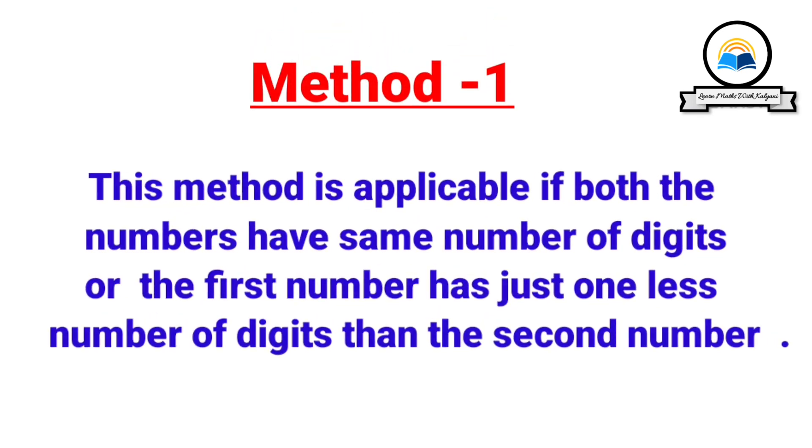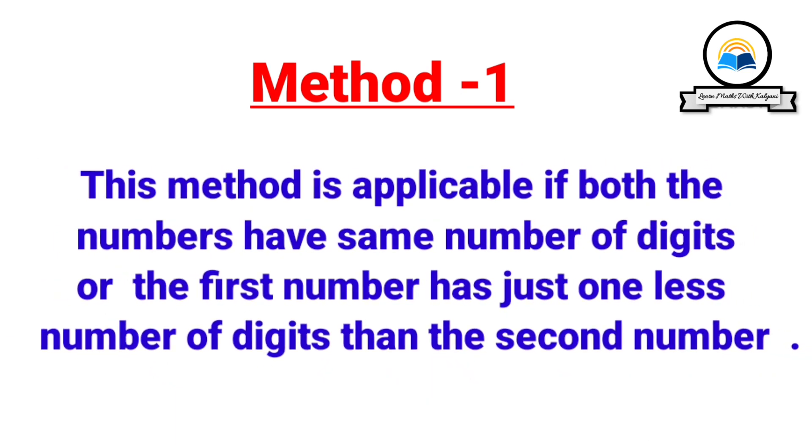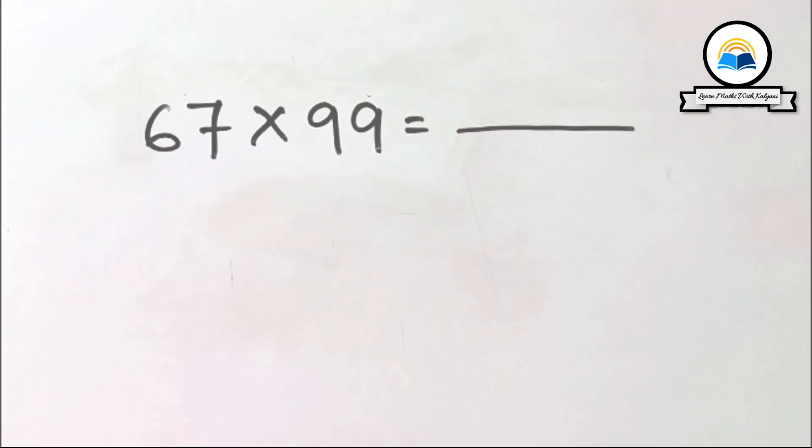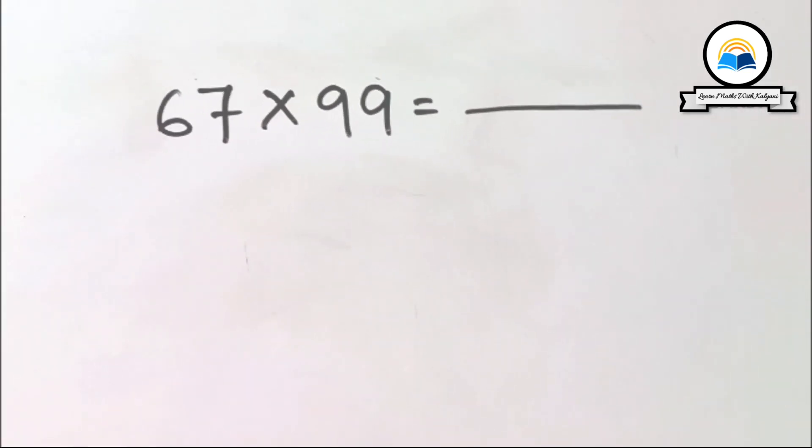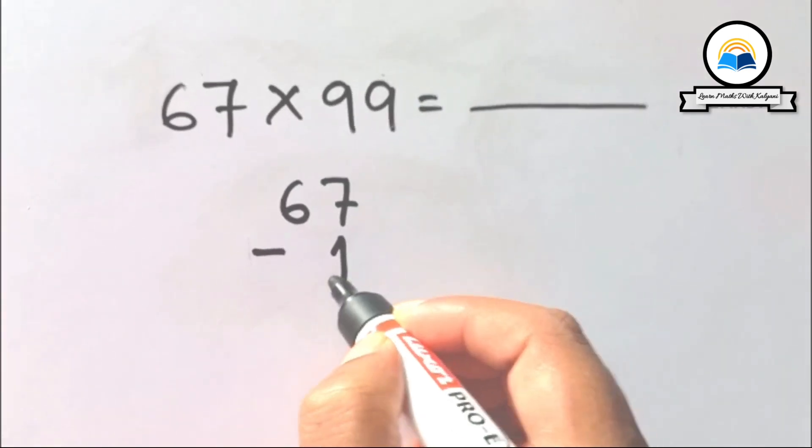Method one: This method is applicable if both numbers have the same number of digits, or the first number has just one less number of digits than the second number. For example, 67 times 99. Subtract 1 from 67: 67 minus 1 equals 66.